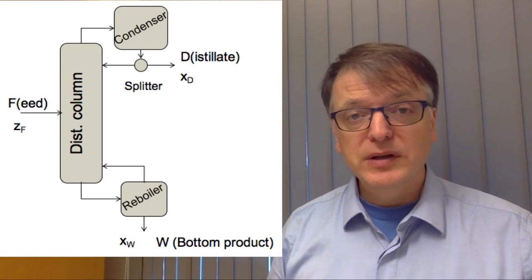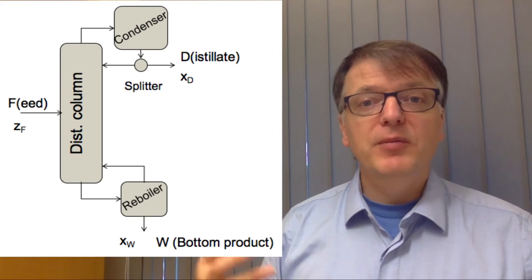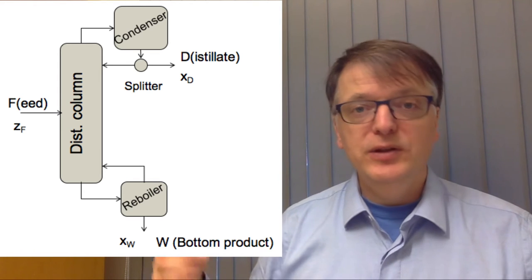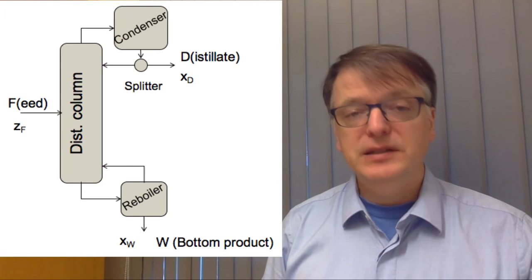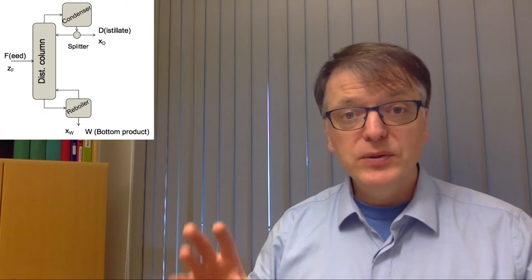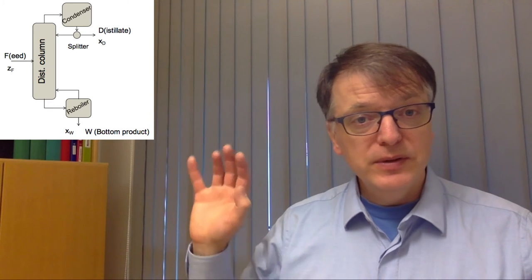And down at the reboiler, well the reboiler is a separate unit. So now you have more flows and your degree of freedom analysis changes. So try to solve this. Try to make a degree of freedom analysis for this system now.